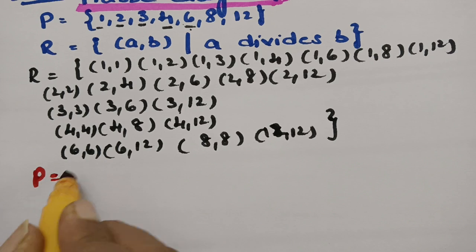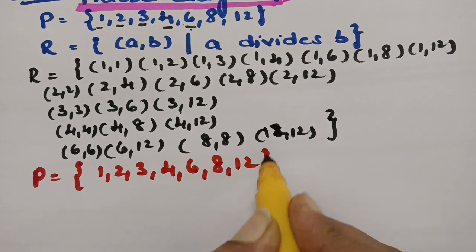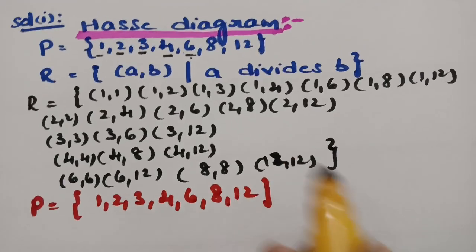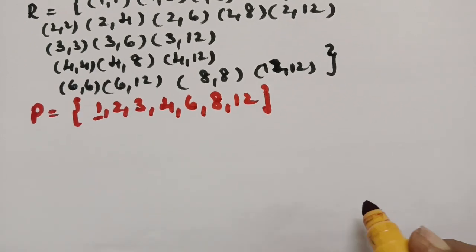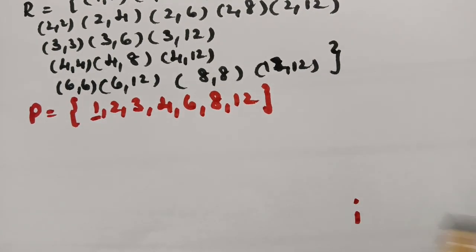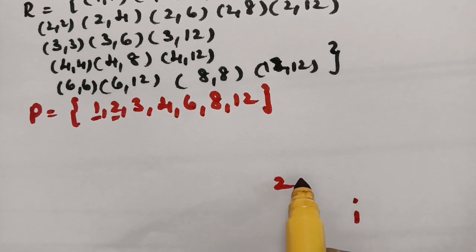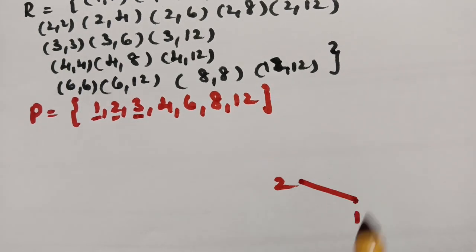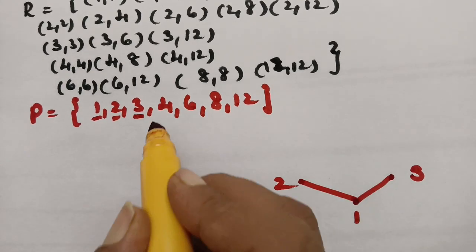P is given as {1, 2, 3, 4, 6, 8, 12} with relation A divides B. The minimum element is 1, so I place 1 at the bottom. Next element is 2 — since 1 divides 2, make an edge between 1 and 2. Next is 3 — since 2 doesn't divide 3, I go to the side. Since 1 divides 3, I place 3 and make an edge with 1.